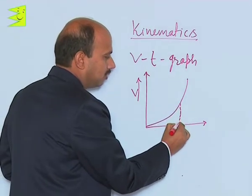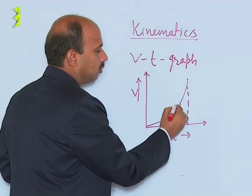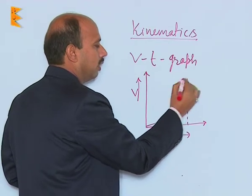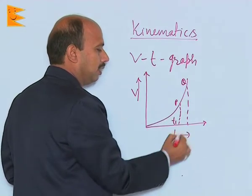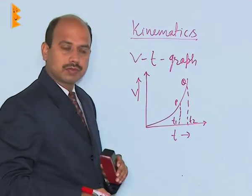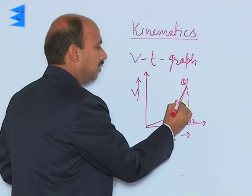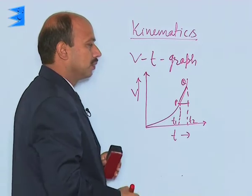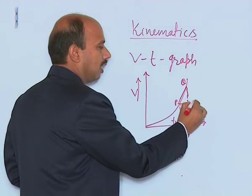Here we can take two points, suppose this point is P and this point is Q. Here time t1 and time t2. Join this point, you will be getting a line and get its slope. We can take here, this is R.